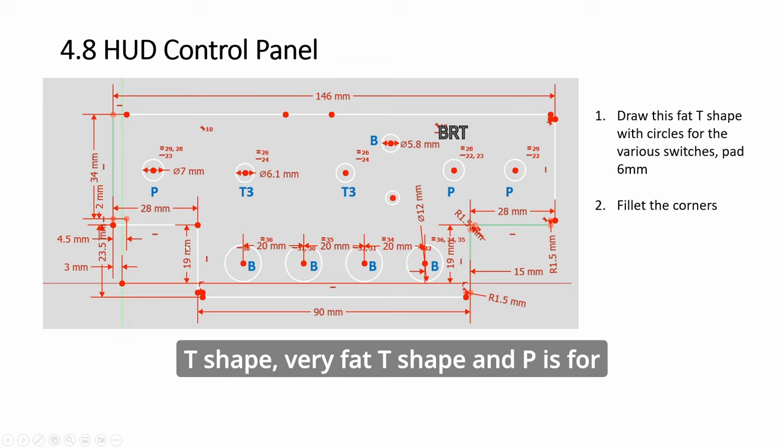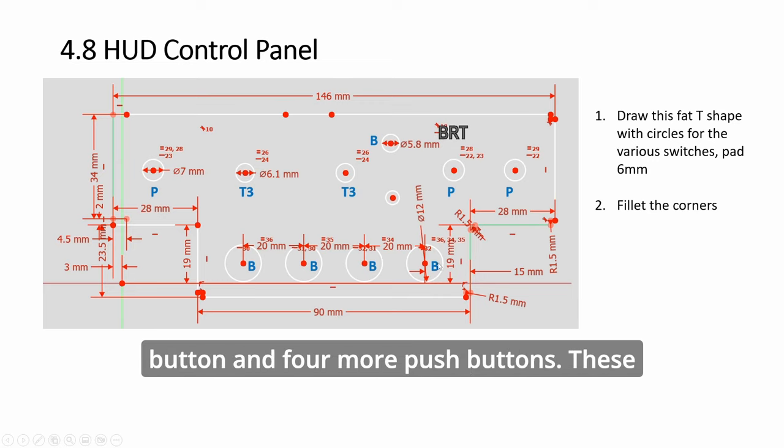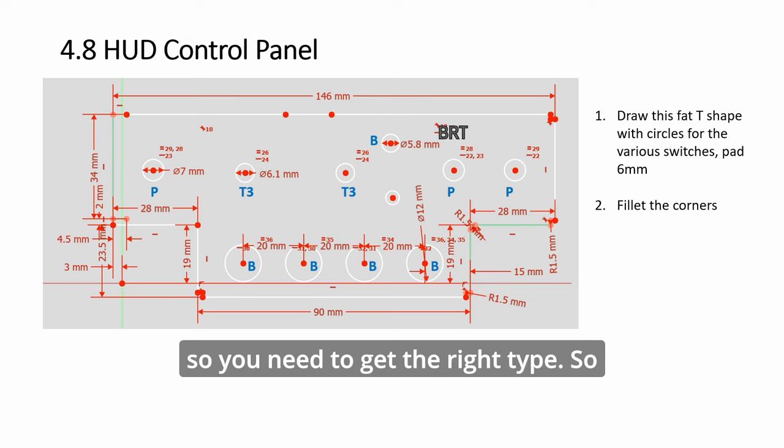So anyway, you have a T-shape, very fat T-shape and P is for part toggles, three-way toggles, a push button and four more push buttons. These buttons here are also light indicators so you need to get the right type.